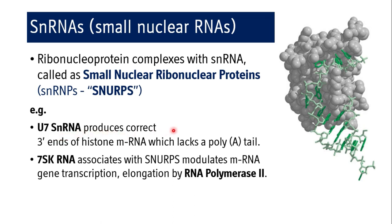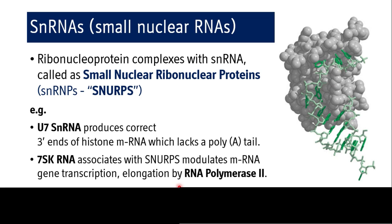U7 snRNA produces the correct 3' end of histone mRNA, which lacks a poly-A tail. Since histone mRNA does not have a poly-A tail, U7 snRNA corrects its 3' end. 7SK RNA associates with snRNA and modulates mRNA gene transcription and elongation by RNA polymerase 2, helping in post-transcriptional modification and gene modulation.